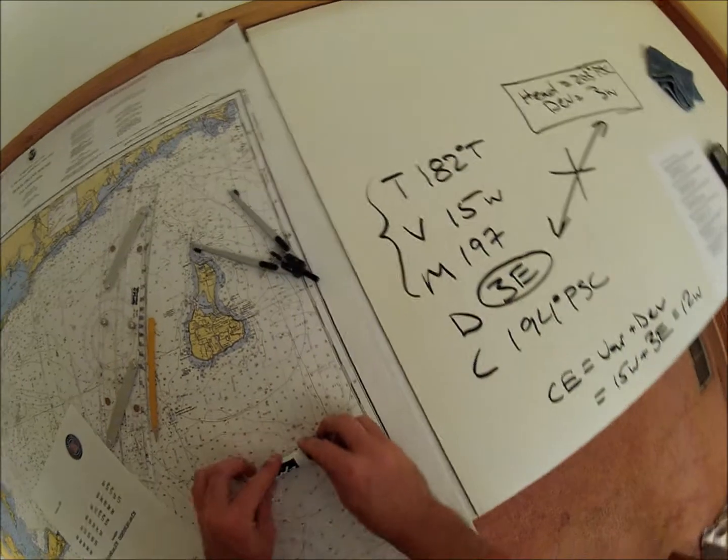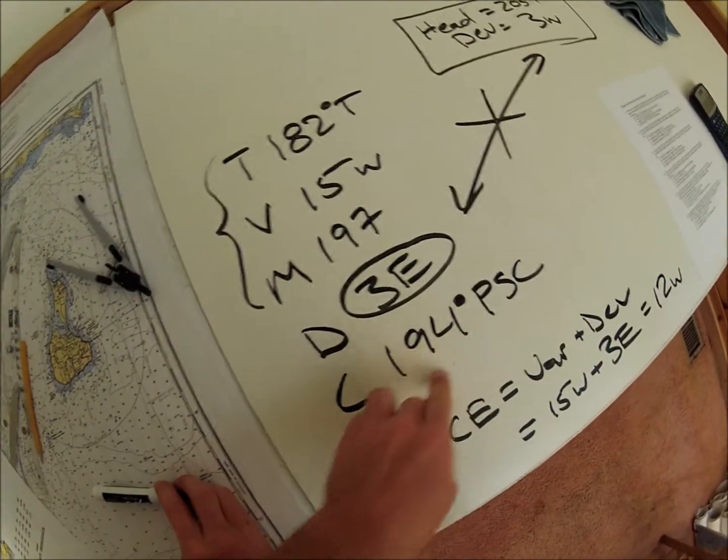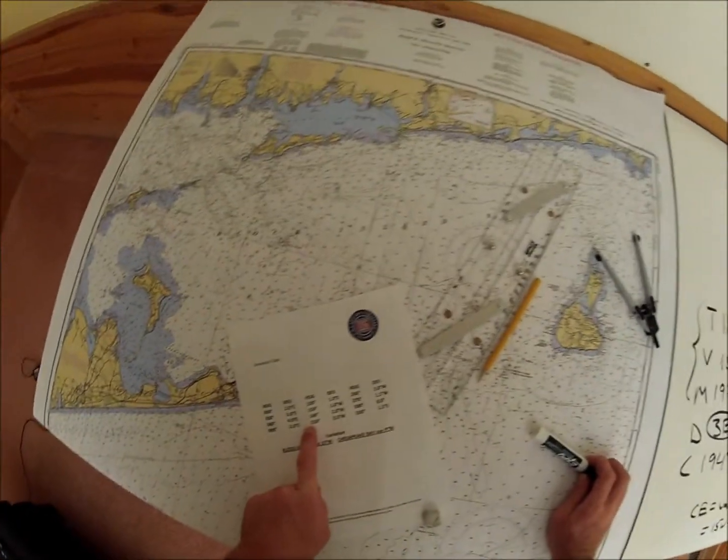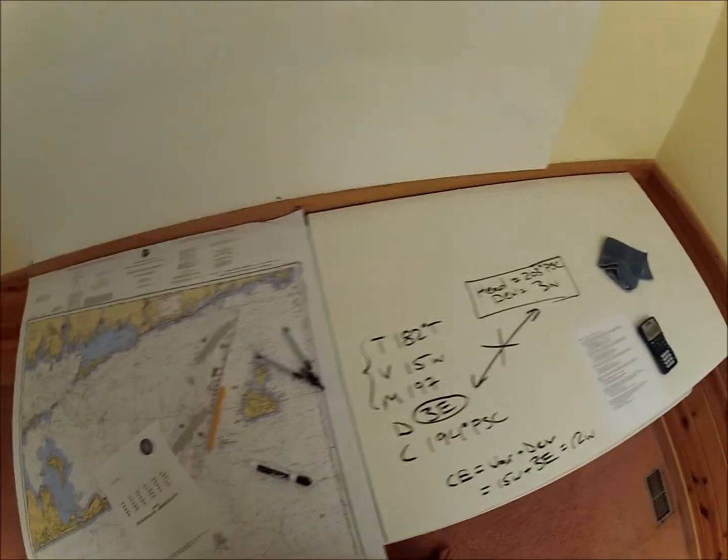And it's going to change by deviation, so because these are the same, when your heading changes, deviation changes, which gives you a different compass bearing. And you can calculate that out, and that's how they created this table.